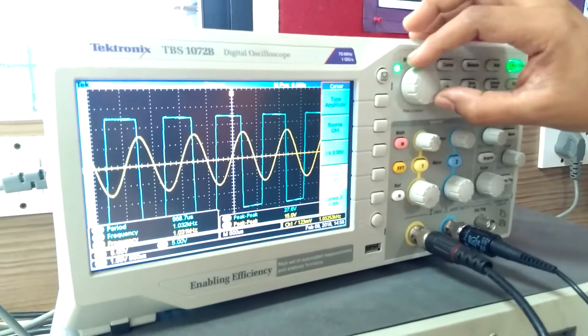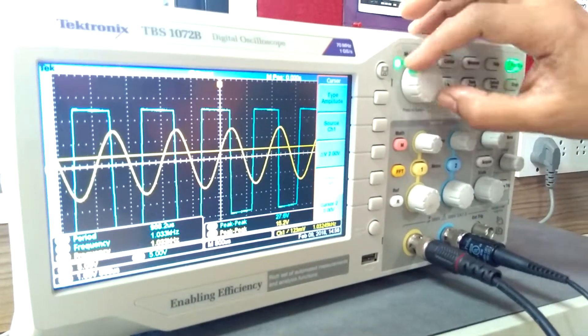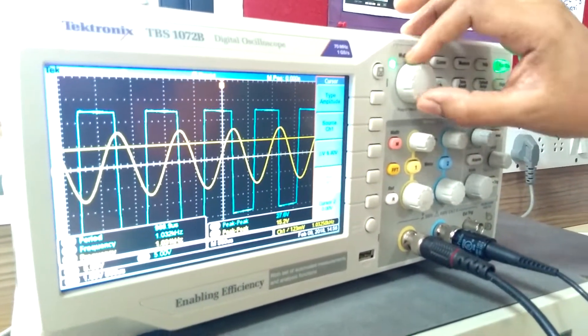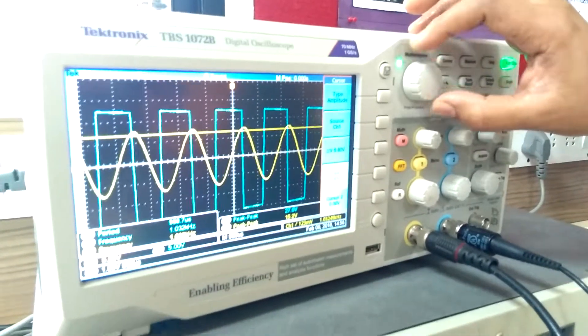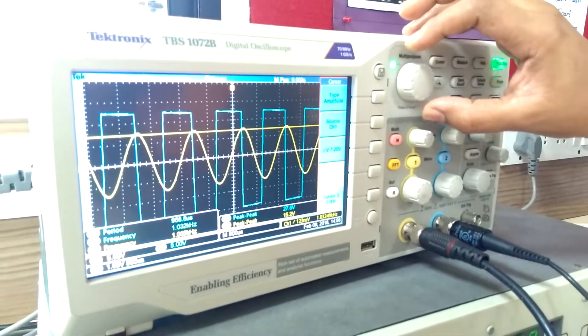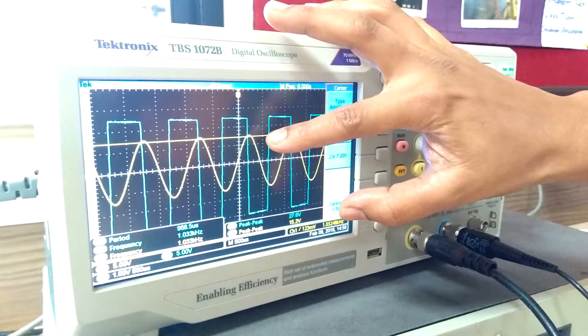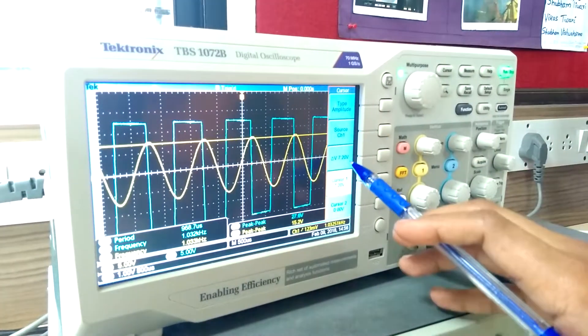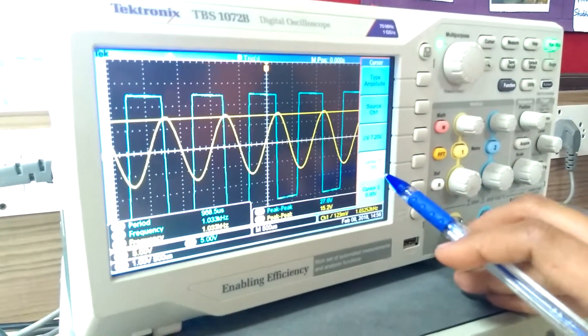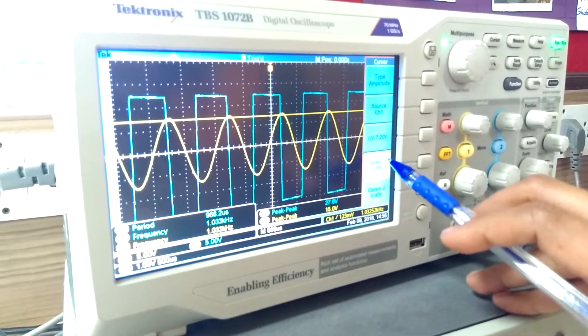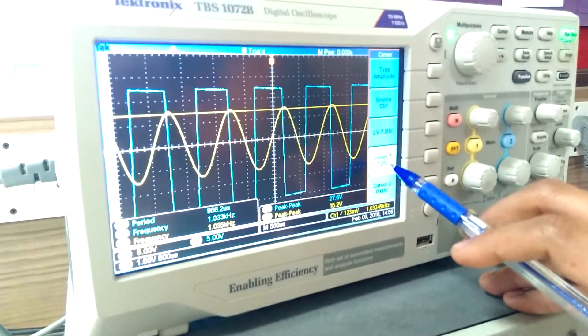Now we will change one of the cursor to the intersection of input and output. So this is the intersection of input and output. You can see the value that is delta V and cursor 1 showing the same value which is UTP, positive value.